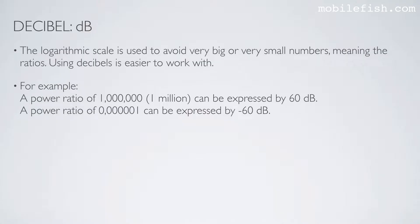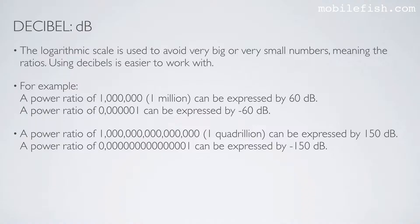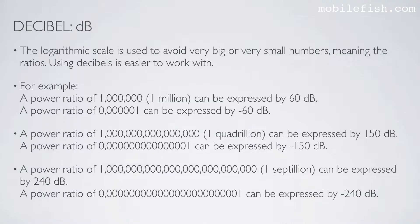For example, a power ratio of 1 million can be expressed by 60 dB. A power ratio of 1 millionth can be expressed by minus 60 dB. A power ratio of 1 quadrillion can be expressed by 150 dB, and 1 quadrillion to the inverse by minus 150 dB. A power ratio of 1 septillion can be expressed by 240 dB, and its inverse by minus 240 dB.